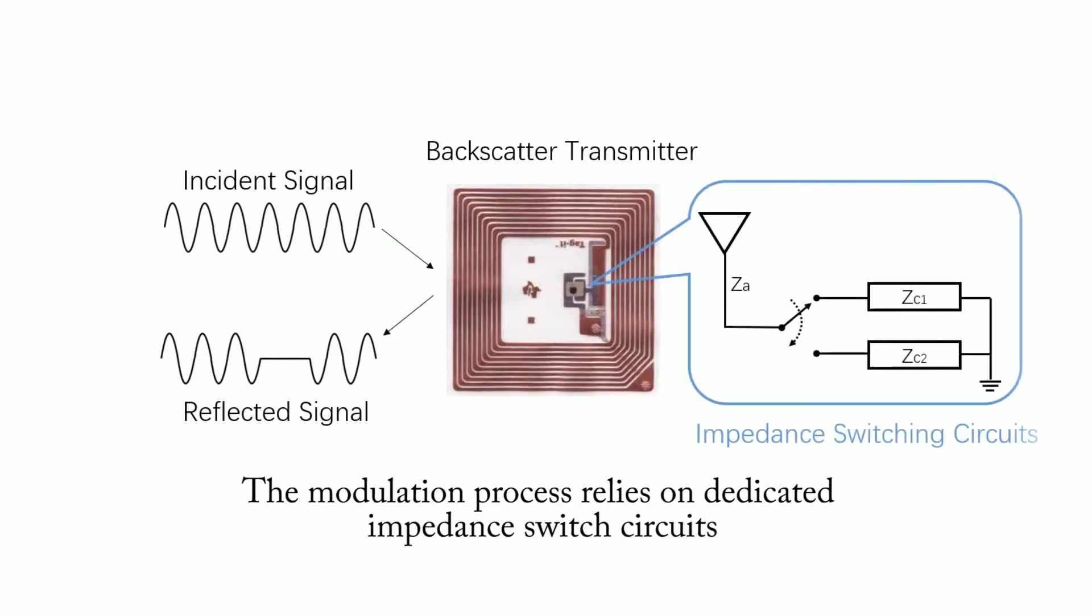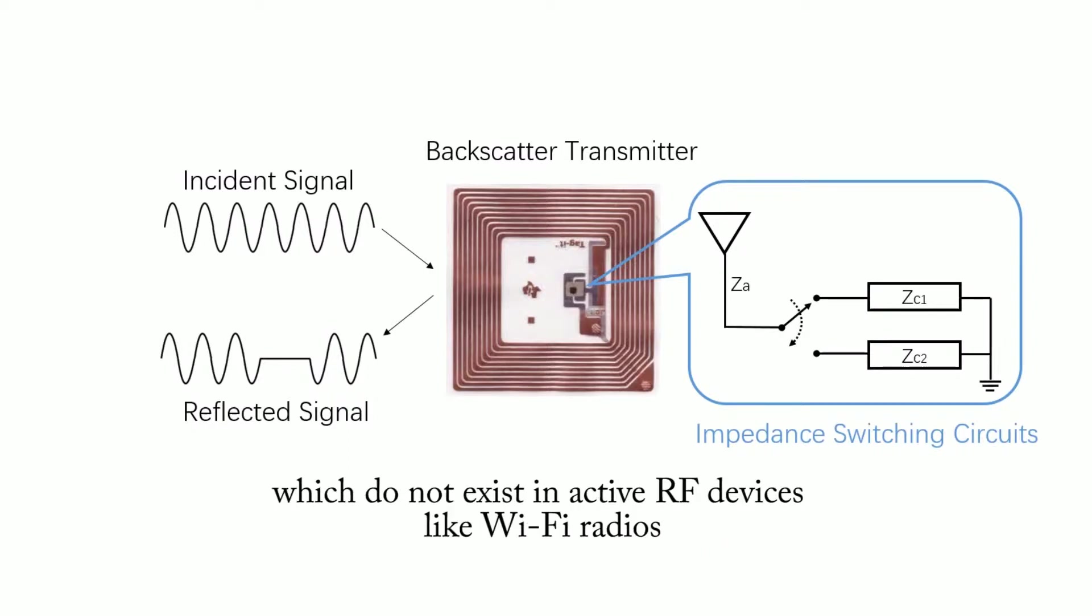The modulation process relies on dedicated impedance switch circuits, which do not exist in active RF devices like Wi-Fi radios.